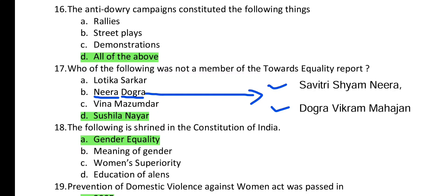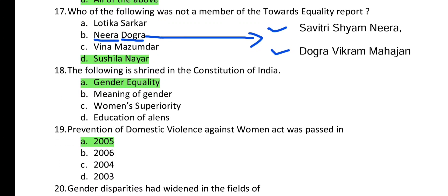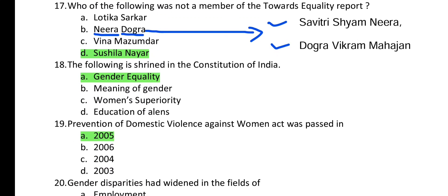Question 17: Who was not a member of the Towards Equality Report? Lotika Sarkar was a member, Bina Majumdar was a member, and Neera Dogra, Savitri Siam, and Vikramajan were also members. Susila Nair was not a member of the Towards Equality Report committee.